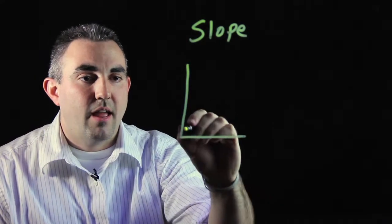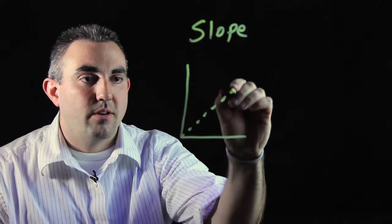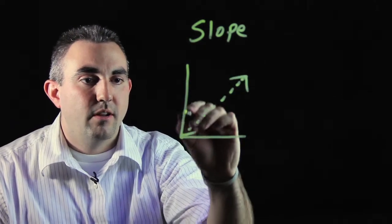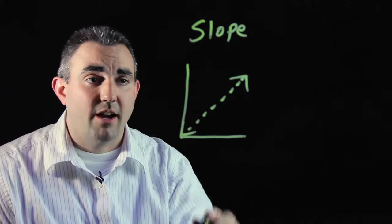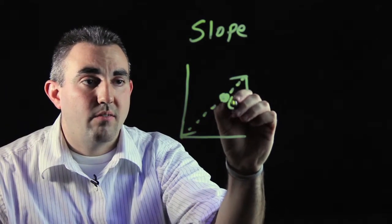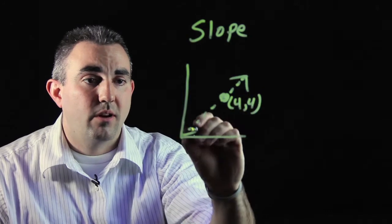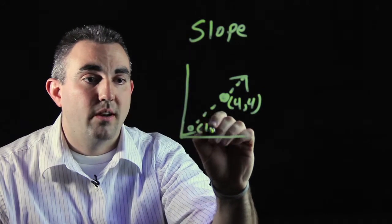If you have a coordinate plane and you graph a line on that coordinate plane, the first thing you're going to need to do is locate two points on that line graph. We're going to call this point here (4,4) and we're going to call this down here point (1,1).